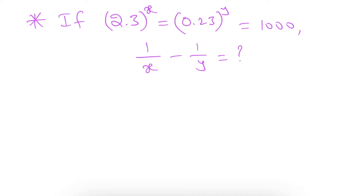If 2.3 to the power x equals 0.23 to the power y equals 1000, find the value of 1/x minus 1/y. To solve this question we will be using two methods, so I am going to explain this in two methods. First method.